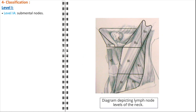The lymphatic system in the neck is meticulously organized into specific levels for effective drainage and immune function. These levels are clinically significant, especially in the evaluation and management of head and neck pathologies including oncological processes. Level 1 is divided into two sub-levels: level 1a includes the submental nodes, located under the chin, serving as drainage points for the lower lip, the floor of the mouth, and the tip of the tongue, a crucial area for oral health.